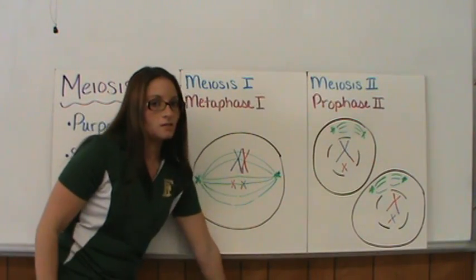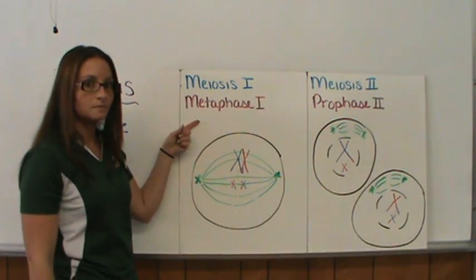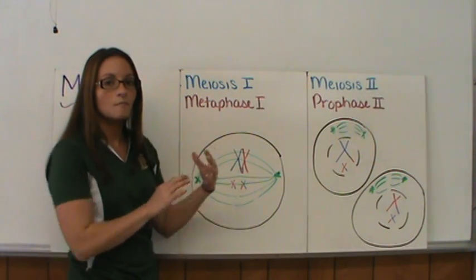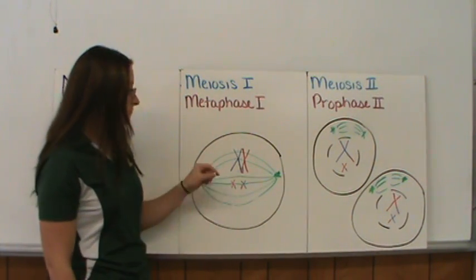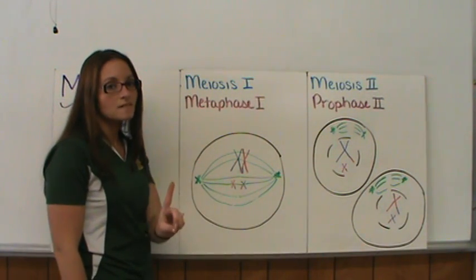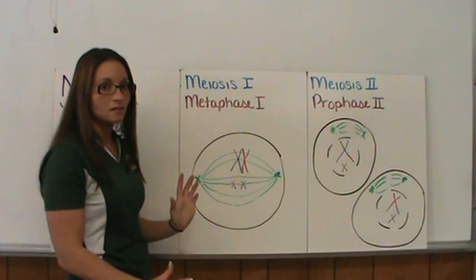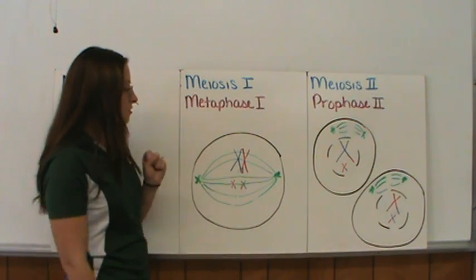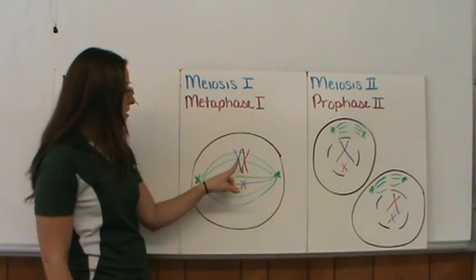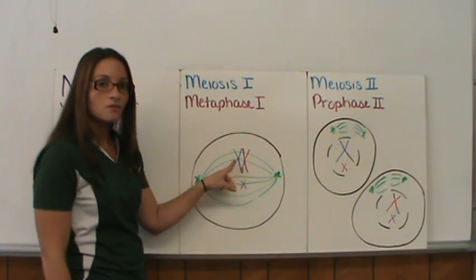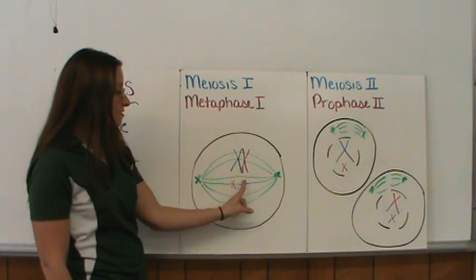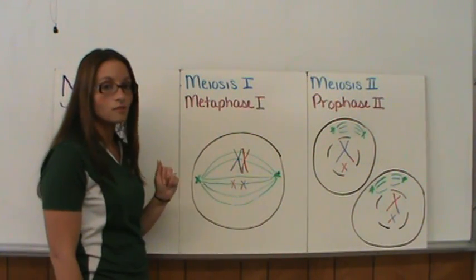The next stage is metaphase I. This is where the chromosomes line up in the middle of the cell — metaphase means middle. The chromosomes line up in pairs, because we want one set of DNA in every cell instead of two. The paired chromosomes, the tetrads, line up along the center of the cell, and the spindle fibers are attached correctly.